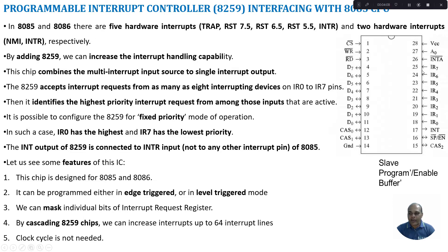One important thing to remember is that the output INT pin from the 8259 IC needs to be connected only to the INTR pin of the 8085 or 8086 microprocessor. It cannot be connected to other pins — it cannot be connected to TRAP, RST 7.5, 6.5, or 5.5 of 8085, or to the non-maskable interrupt of 8086. It can be connected only to the INTR pin.